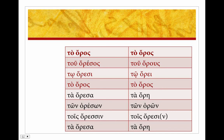Let's take a look at a neuter: tooros, meaning hill or mountain. Again, I've got the uncontracted forms here and the contracted on the right. Tooros — no change. Tooresos becomes -orus: sigma drops out, epsilon-omicron, giving to orus. Oresi becomes toore. Tooros, tooros. Taoresa becomes taore. Tonoresom becomes tonoron. Toisoresin — all that drops out is the sigma, giving toisoresin. Taoresa becomes taore.